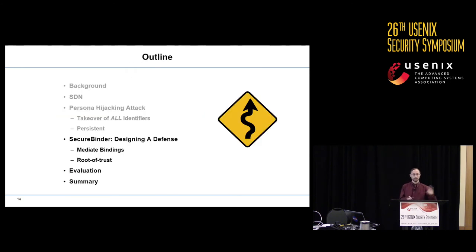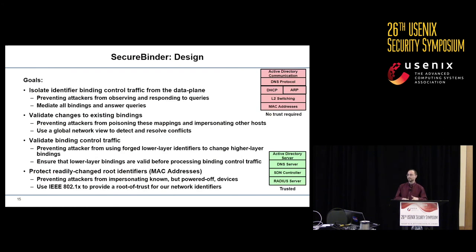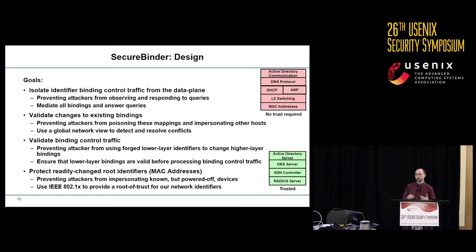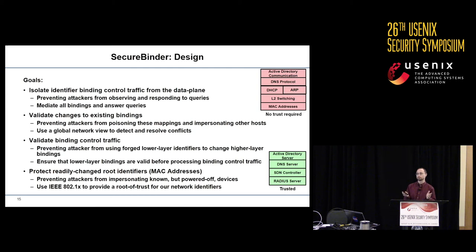We're now going to look at SecureBinder, the defense we developed to completely prevent these identifier binding attacks. When we set out to design SecureBinder, we had a number of goals. First, we wanted to isolate identifier binding control traffic from the data plane to prevent the attacker from being able to observe and respond to identifier queries. To do that, we mediate all of these bindings and directly answer these queries rather than relying on broadcast. While we still use insecure identifier binding protocols like ARP, we don't actually have to trust them anymore because they only operate between the network device and the SDN controller.